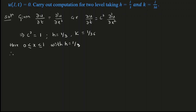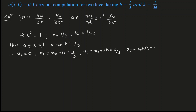Therefore, the x values are 0, 1/3, 2/3, and 1. For t, we need to compute up to 2 levels. With k = 1/36, for 2 levels it is 2/36 = 1/18. So the t values go up to 1/18: t₀ = 0, t₁ = 1/36, and t₂ = 1/18.